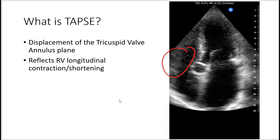As the heart contracts, the lateral wall of the right ventricle gets shorter along this plane, including the tricuspid valve annulus. And that is the displacement of the tricuspid valve annulus.